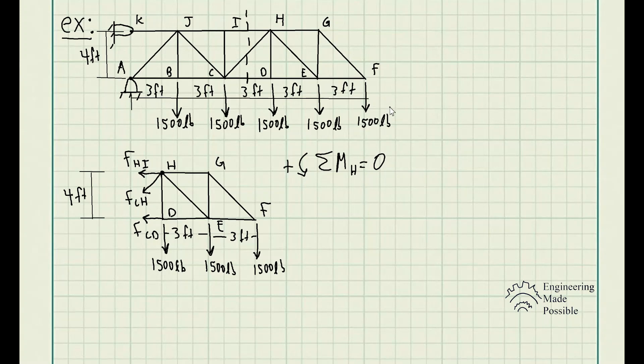So we see the forces HI and the force CH basically has no moments because it's going through right at that point. It's not causing any rotation about point H. But we do have the FCD causing a moment, and it's going to be counterclockwise. So it's going to be negative FCD times the length perpendicular to H, which is four feet here.